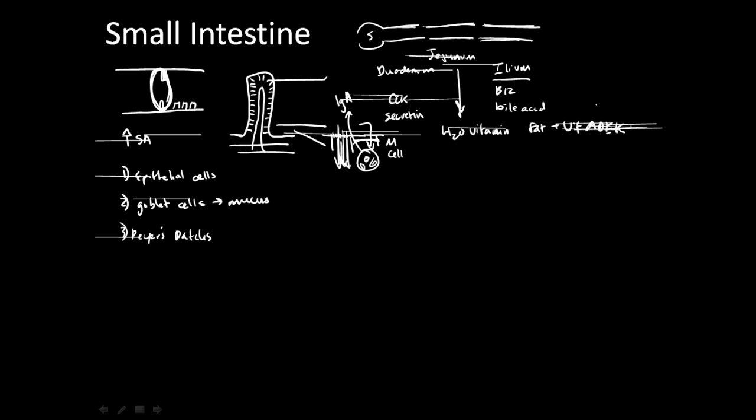First and foremost, the small intestine is for digestion. There are a couple of main types of nutrition. The first would be carbohydrates. Carbohydrates are everything from as complex as starches to simple sugars, such as glucose and galactose. There are first pancreatic enzymes, which are secreted into the lumen.